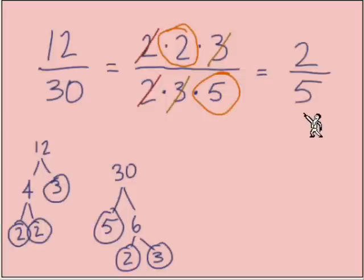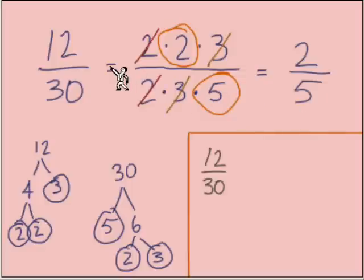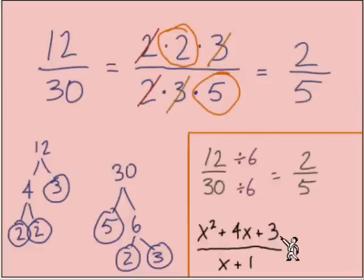This might not be the way you would prefer to simplify 12/30. Maybe more often you would choose, what can I divide top and bottom by? I can divide them both by 6, and that leads to the same answer, 2/5. But this first way is going to be much more useful when we're working with rational expressions.